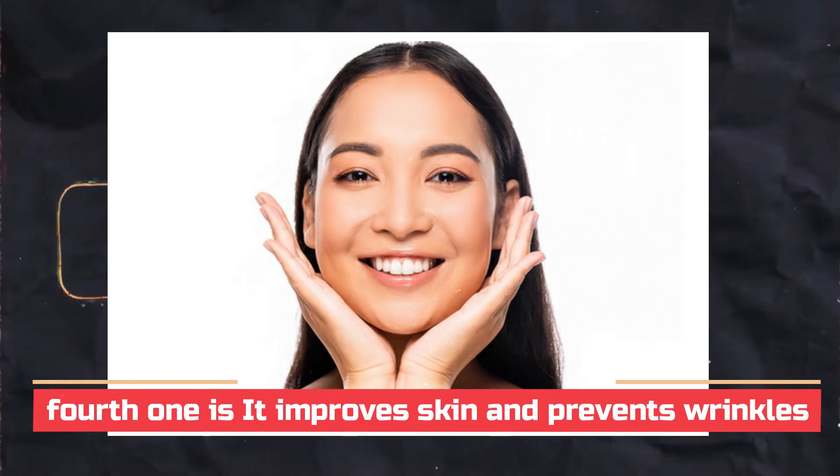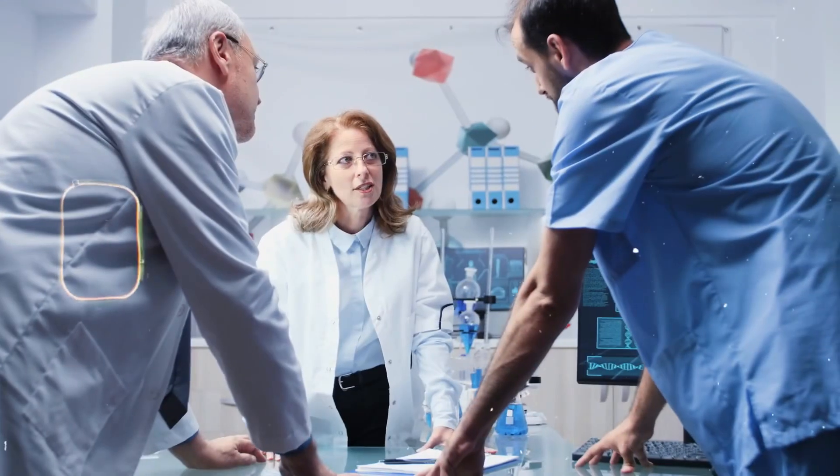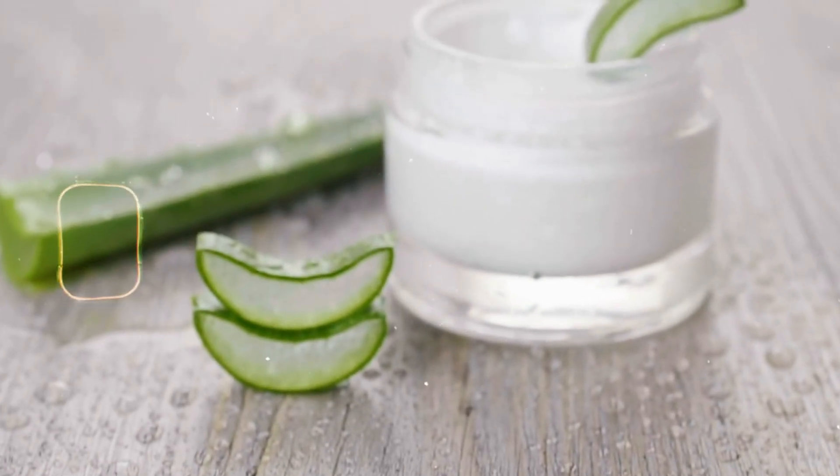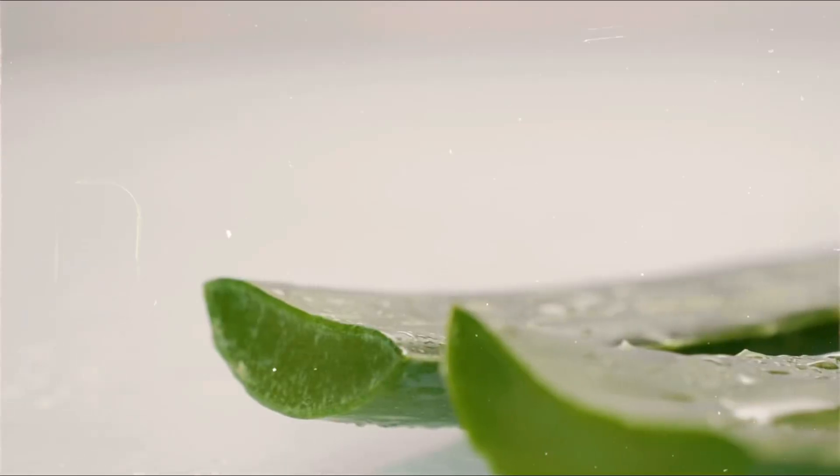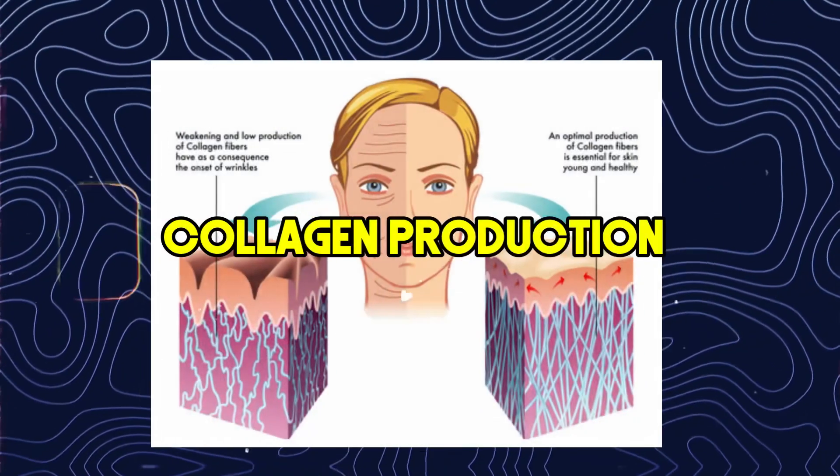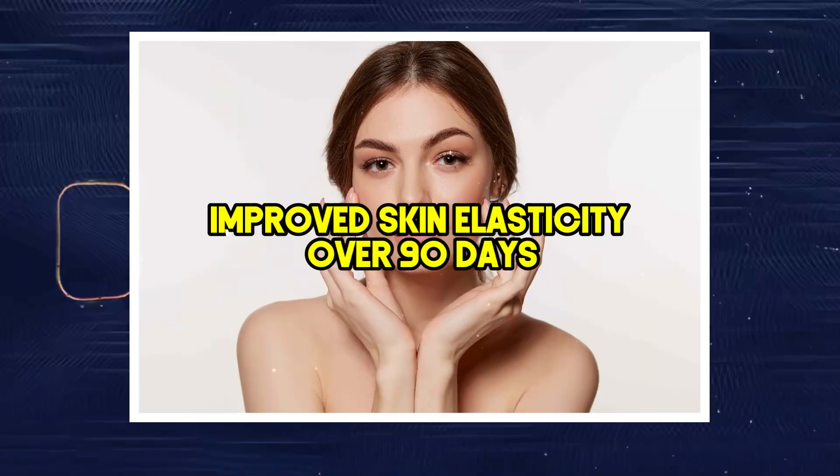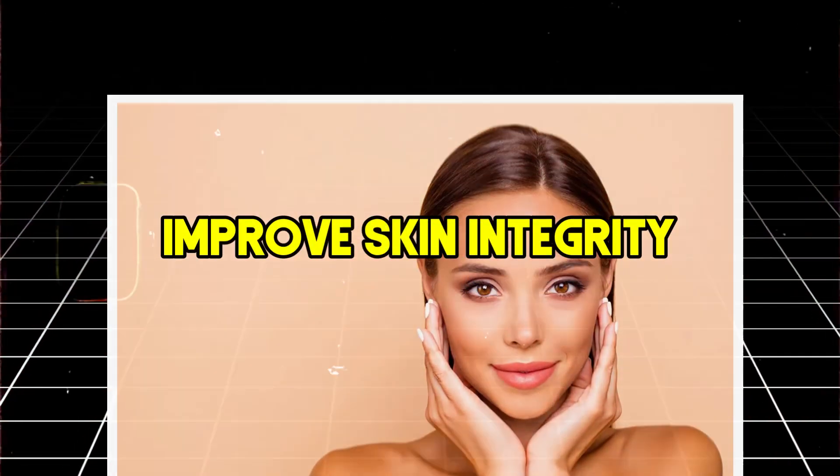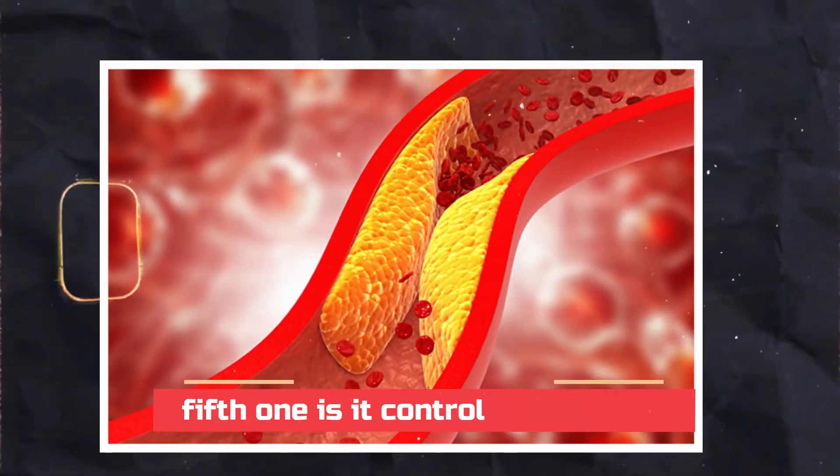Next, the fourth one is it improves skin and prevents wrinkles. Preliminary evidence suggests that topical aloe vera gel can help slow the aging of the skin. In a 2009 study involving 30 women over the age of 45, taking oral aloe vera gel increased collagen production and improved skin elasticity over 90 days. Additionally, reviews suggest that aloe vera helps the skin retain moisture and improve skin integrity, making it beneficial for dry skin conditions.